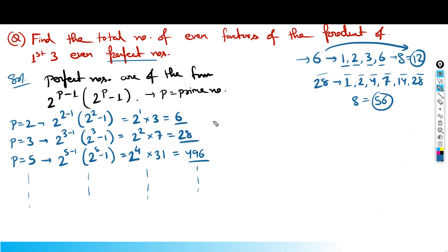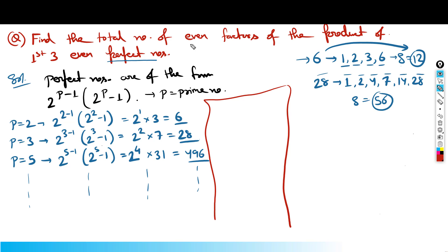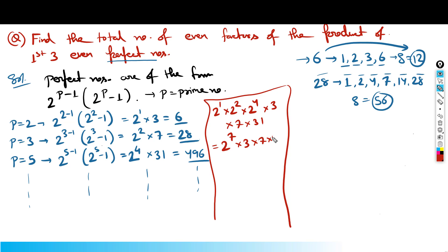The question asks for the total number of even factors of the product of the first three even perfect numbers. If I multiply all three: 6 × 28 × 496 = 2^1 × 2^2 × 2^4 × 3 × 7 × 31 = 2^7 × 3^1 × 7^1 × 31^1.